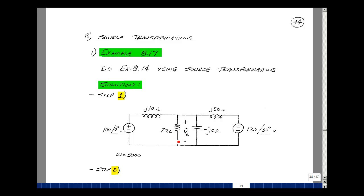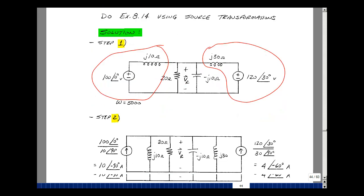And now we're going to solve for V sub R using source transformations. So we're going to take a voltage source in series with an impedance, likewise one over here, and convert it into a current source in parallel with the same impedance. So let's do that.